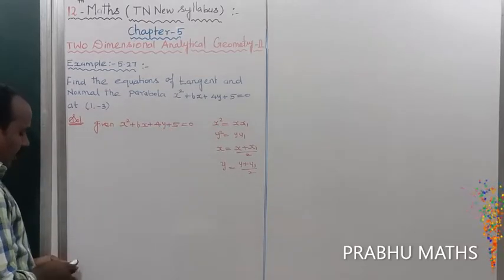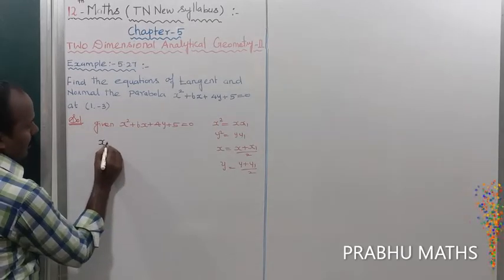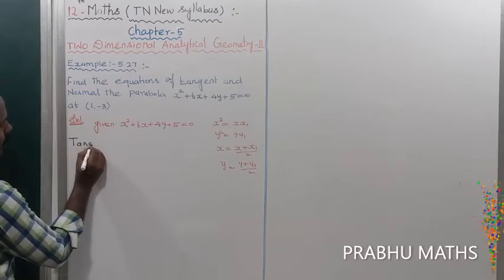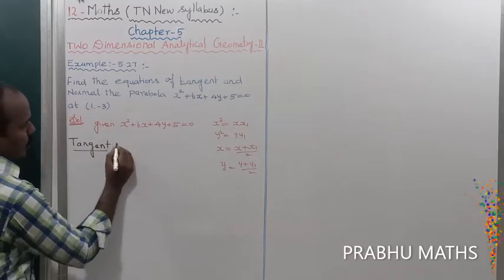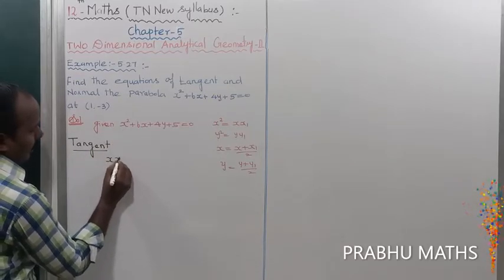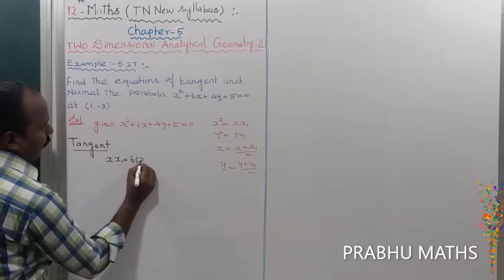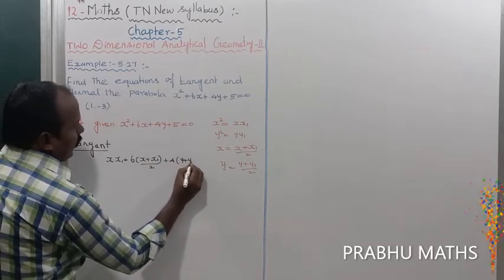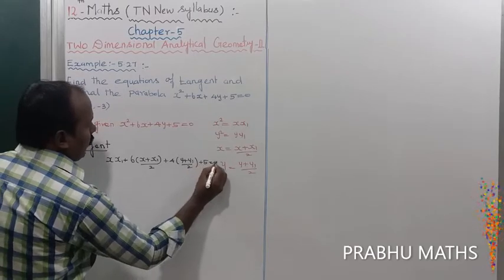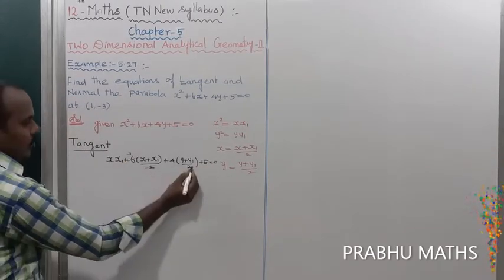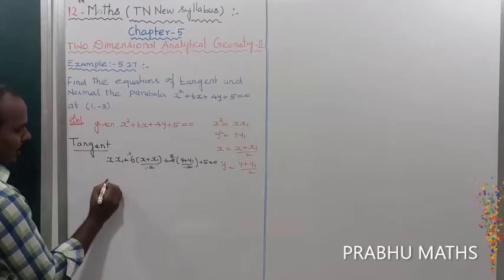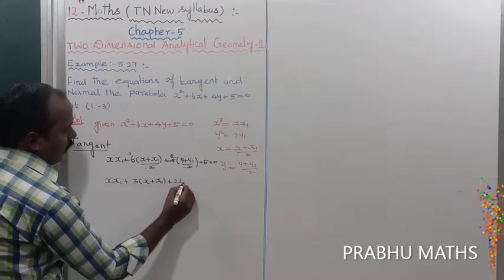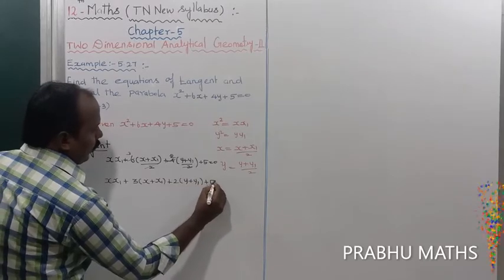The constant 5 remains. The tangent equation becomes: x·x₁ + 6·(x + x₁)/2 + 4·(y + y₁)/2 + 5 = 0. The 2 cancels with 6 and also with 4, giving: x·x₁ + 3(x + x₁) + 2(y + y₁) + 5 = 0.